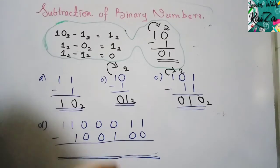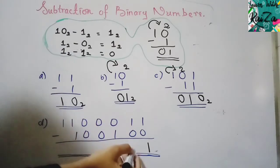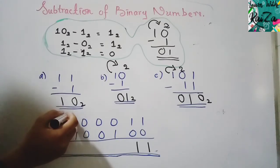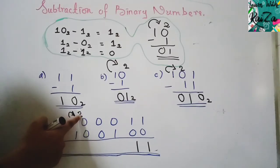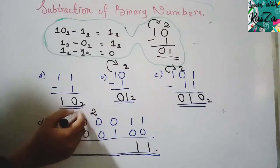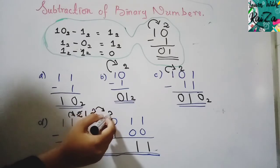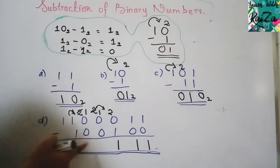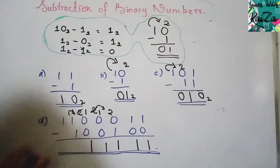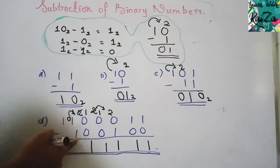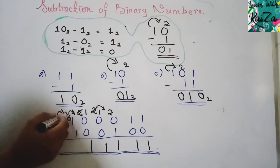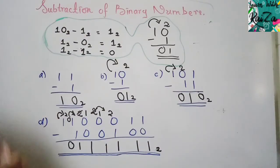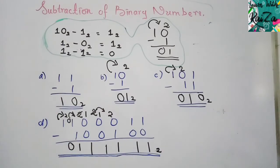In a longer subtraction: 1−0 = 1, 1−0 = 1. When 0−1 is not possible and the adjacent column is also 0, we must borrow from further left. That column becomes 2, we take 1 for the current column making it 2, and the borrowed-from column reduces by 1. Then 2−1 = 1. Continue column by column carefully, tracking all borrows.